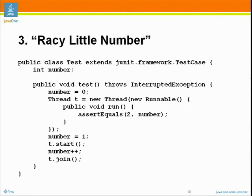We start out with number one, then we start the thread, then we increment the number, and finally we wait for the thread to complete. When you start a thread, it doesn't necessarily start right away. So although this number increment is after the start method, the number could get incremented to two before the thread actually runs. As a practical matter, the number will be equal to two by the time the thread runs, so the assertion is going to succeed and I think the test will always pass.